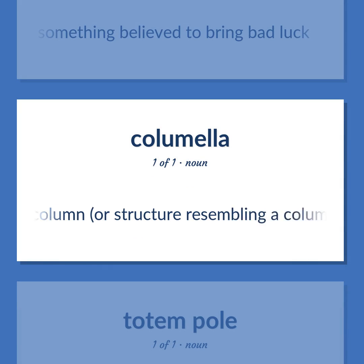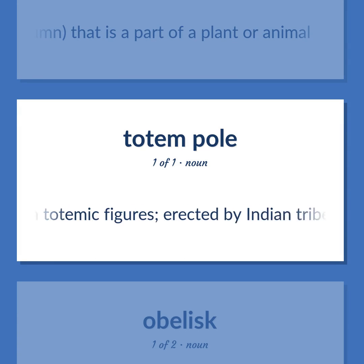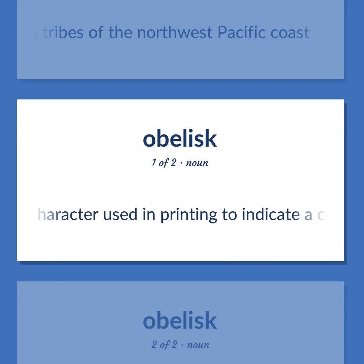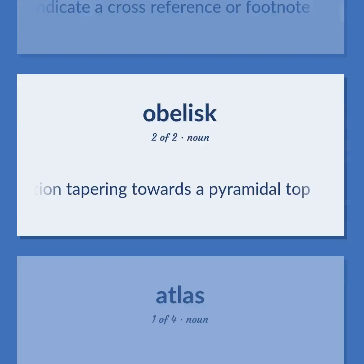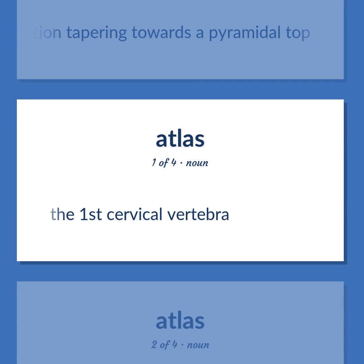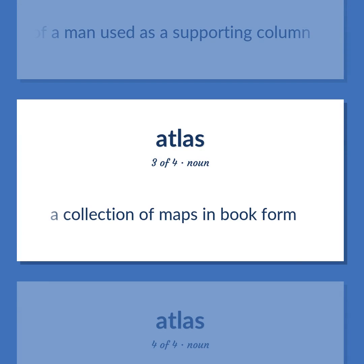Columnella/Columnar structures: A small column or structure resembling a column that is a part of a plant or animal. Totem pole: A tribal emblem consisting of a pillar carved and painted with totemic figures, erected by Indian tribes of the Northwest Pacific Coast. Obelisk (dagger): A character used in printing to indicate a cross-reference or footnote. Obelisk: A stone pillar having a rectangular cross-section tapering towards a pyramidal top. Atlas (anatomy): The first cervical vertebra. Telamon: A figure of a man used as a supporting column. Atlas (book): A collection of maps in book form.